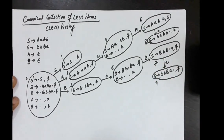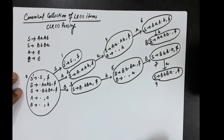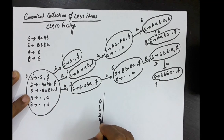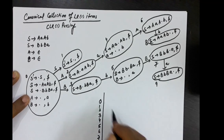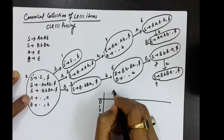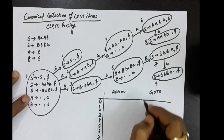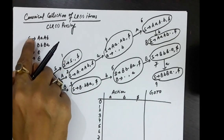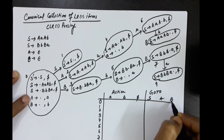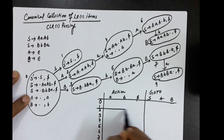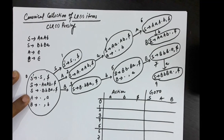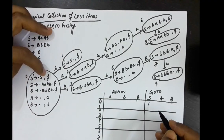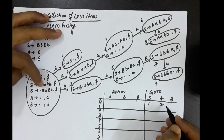No more transitions from states 8 or 9. Now let us build the parsing table. States are 0 through 9. The action part has columns for small a, small b, and dollar; the go-to part has columns for capital S, capital A, and capital B. From state 0: on capital S go to 1, on capital A go to 2, on capital B go to 3.